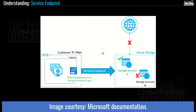One more term you will hear alongside public and private endpoints — which confuses many people — is service endpoint. We have discussed private endpoints, which allow virtual network assets to privately connect to each other as if they were part of the same network, routing traffic over the Microsoft Azure backbone rather than the open internet. On the other hand, a service endpoint enables virtual network resources to connect to an Azure service's public endpoint using private IP addresses, extending the virtual network's identity to the target resource, so traffic is routed through the Azure backbone network rather than the internet. A service endpoint remains a publicly routable IP address.